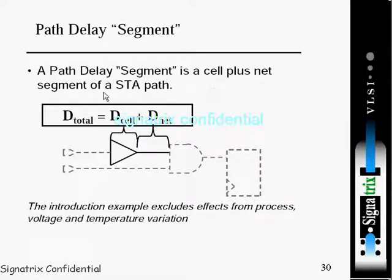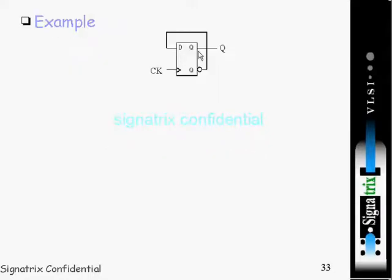A path delay segment is a cell plus net segment of an STA path. So D_total delay is equal to delay produced by cell plus delay produced by net. This is called the path segment circuit. Now we have to calculate the maximum frequency of this design.